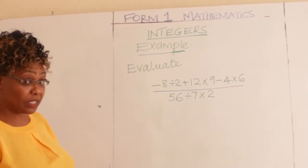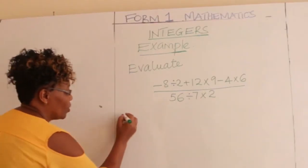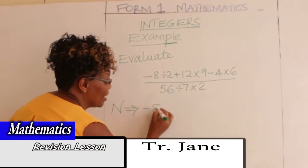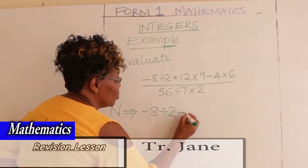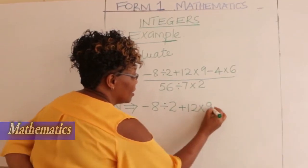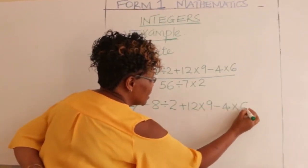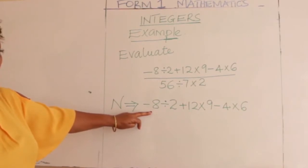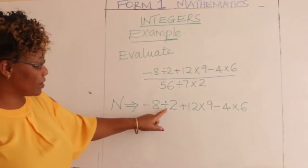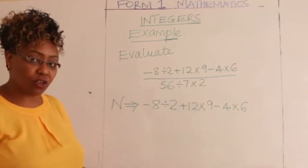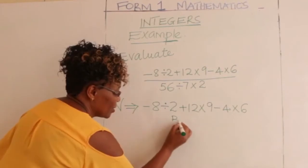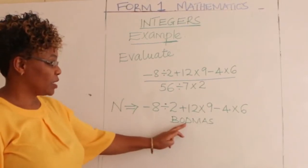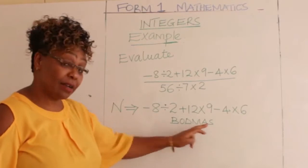How do you go about it? We can see we have minus, we have division, we have addition, we have multiplication, and so on. So here we use BODMAS: brackets, of, division, multiplication, addition, and subtraction.